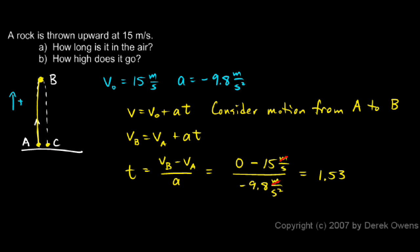And you can see the meters cancel out and one of those seconds cancels out and I'm left with seconds. Positive 1.53 seconds. That's the time from A to B.